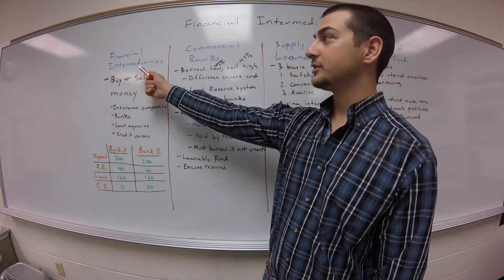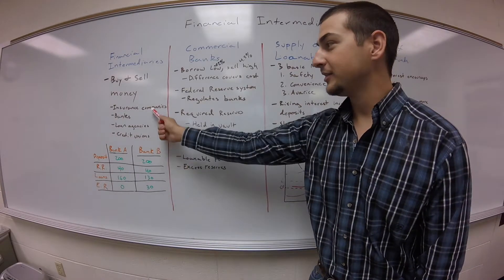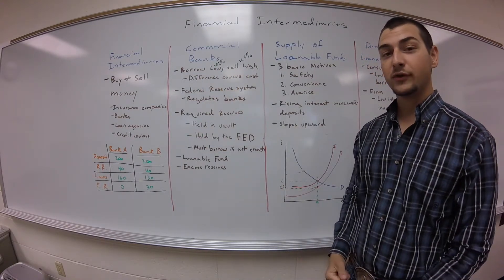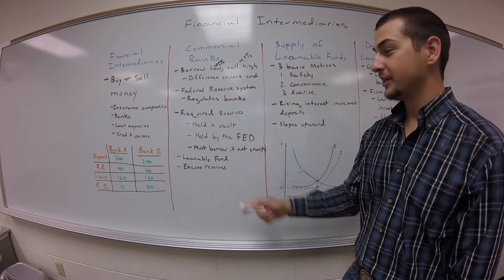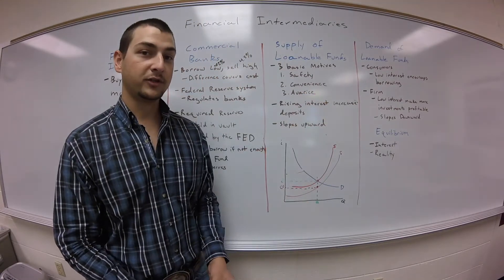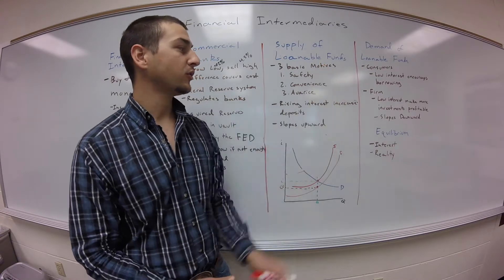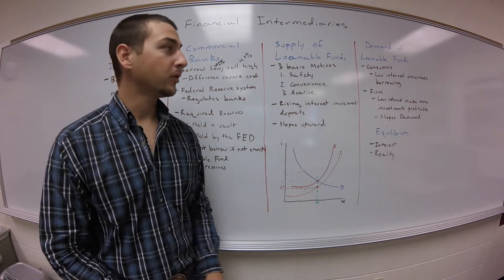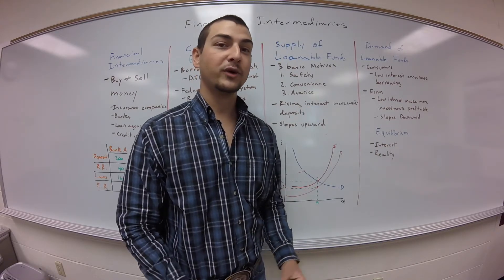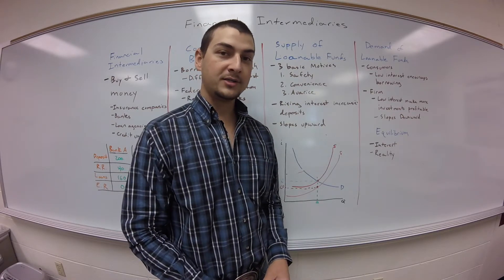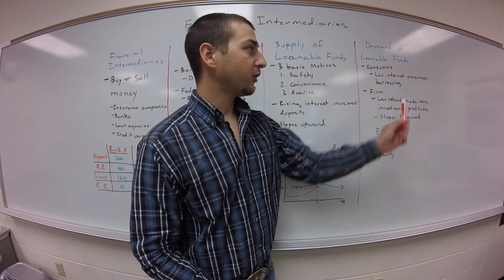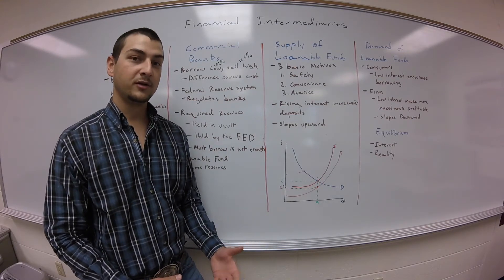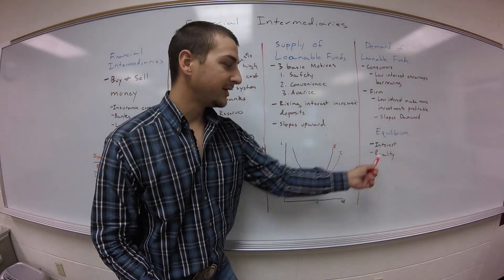In this video we discussed financial intermediaries and how they buy and sell money — insurance companies, banks, loan agencies, and credit unions. We discussed commercial banks and how they buy and sell money through different interest rates. We discussed required reserves, loanable funds, and excess reserves. We also discussed the supply of loanable funds and why it exists because of three basic motives, and how rising interest rates increase deposits so the supply of loanable funds slopes upward. We discussed the demand for loanable funds — as interest rates fall, demand for loanable funds increases, and as interest rates rise, demand falls, so it slopes downward. We find a theoretical equilibrium interest rate between supply and demand, but in reality there are two slightly different interest rates because banks are trying to buy low and sell high.